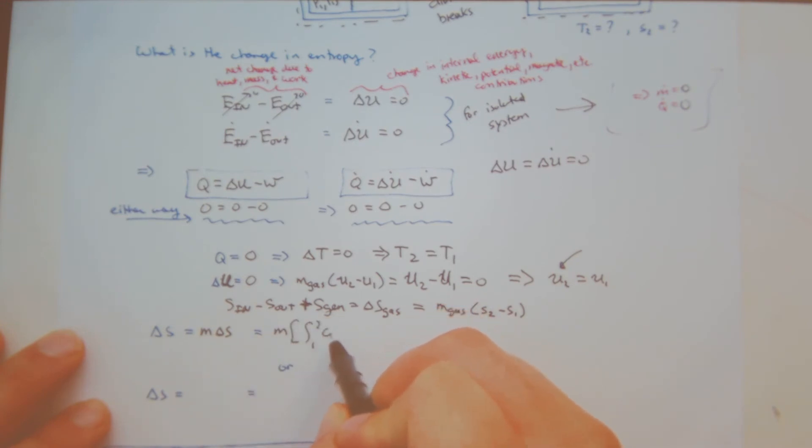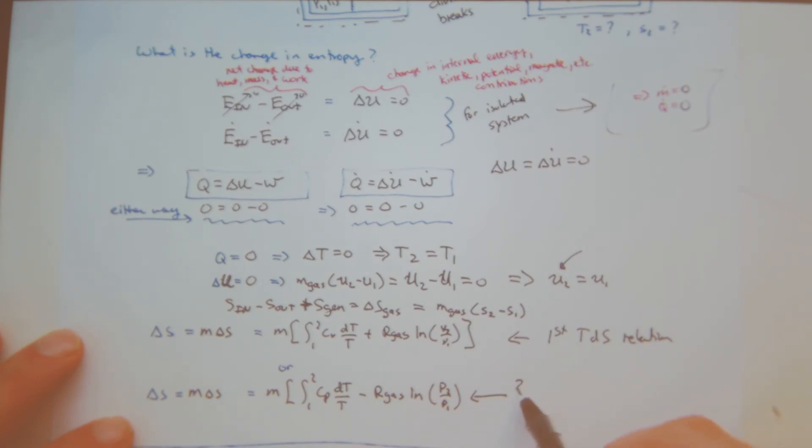So I have the integral from 1 to 2, Cv Dt over T, plus R gas, the natural log V2 over V1 - this is the first TDS relation. Or I can use the second: M delta small s, M integral from 1 to 2, Cp Dt over T, minus R gas natural log P2 over P1 - second TDS relation.